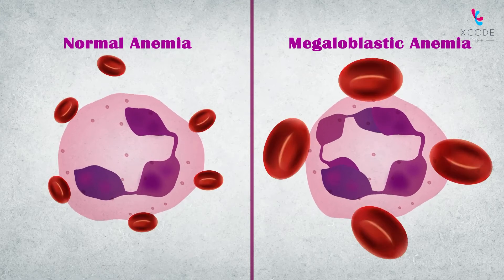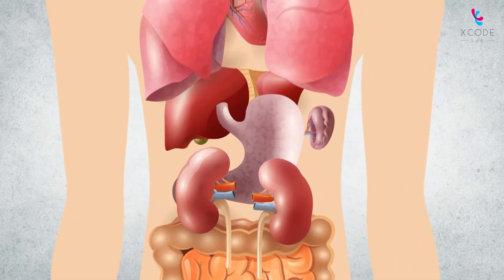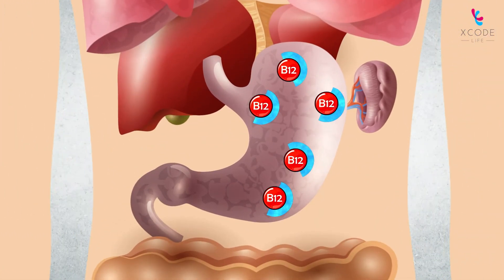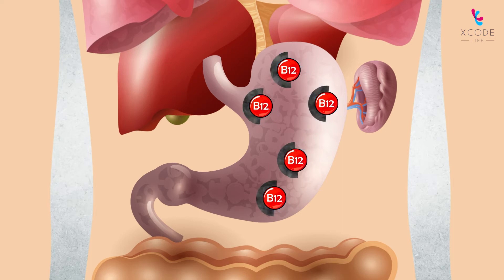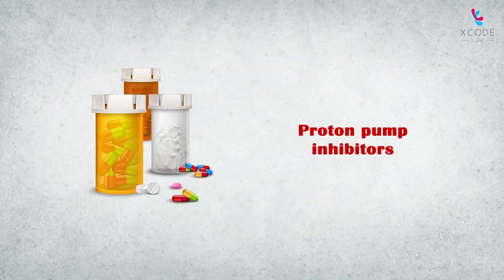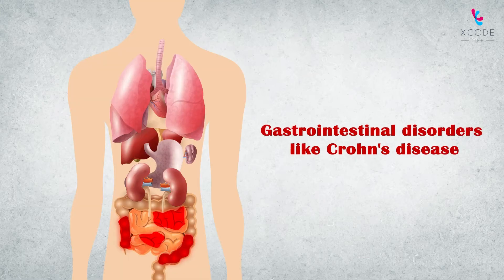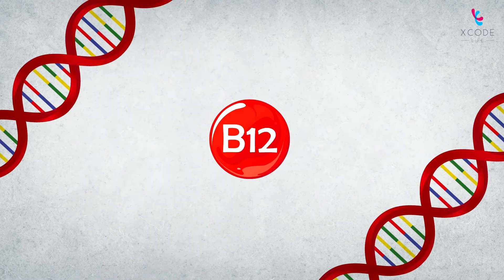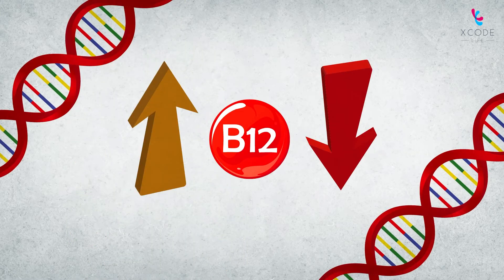A common cause of vitamin B12 deficiency is pernicious anemia, in which your immune system mistakenly attacks cells that are required to absorb vitamin B12. Other causes of vitamin B12 deficiency may include certain medications like proton pump inhibitors and gastrointestinal disorders like Crohn's disease.